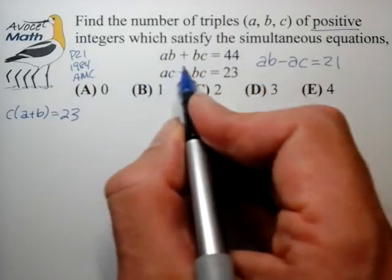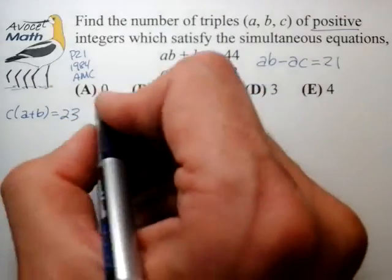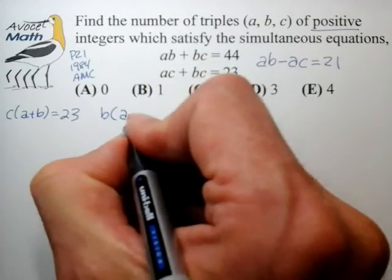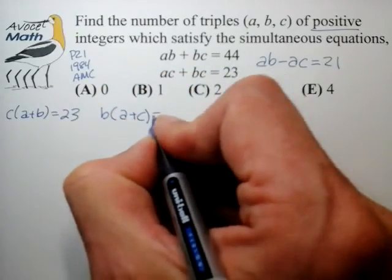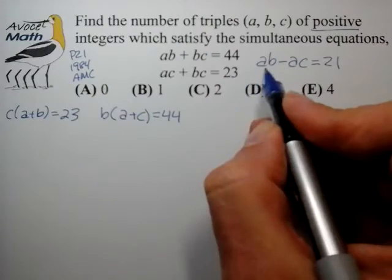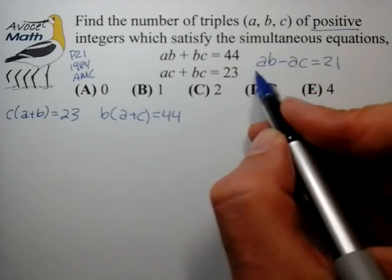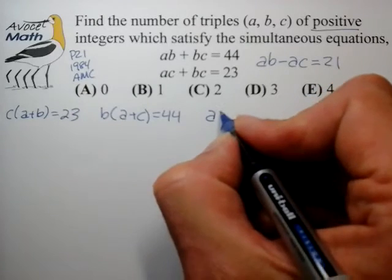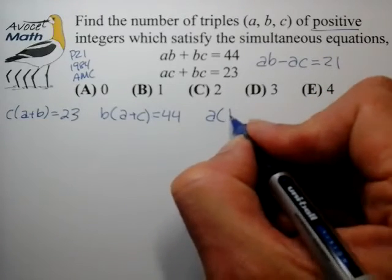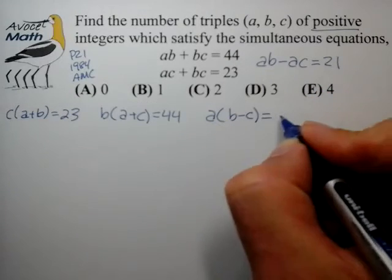This equation here we can pull out the b and it gives us b times (a plus c) is equal to 44, and this auxiliary equation that we formed can be factored for the a term to give us a times (b minus c) is equal to 21.